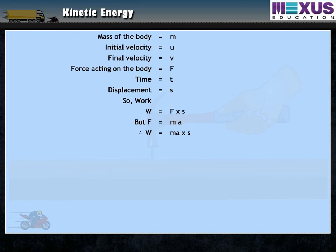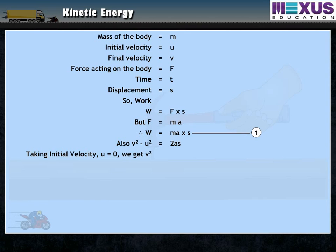Let it be equation 1. Also, we know that V² minus U² is equal to 2AS. So, if initial velocity U is equal to 0, then V² is equal to 2AS. Therefore, AS is equal to ½V². Let it be equation 2.